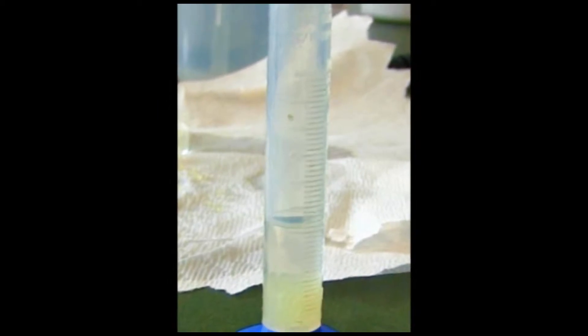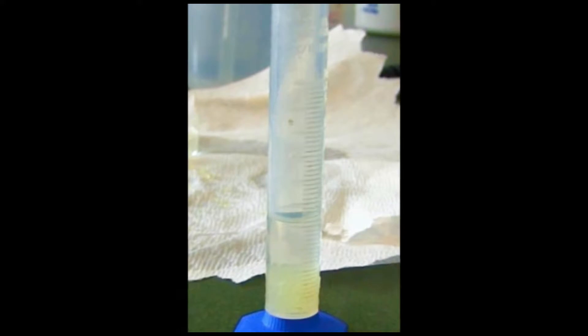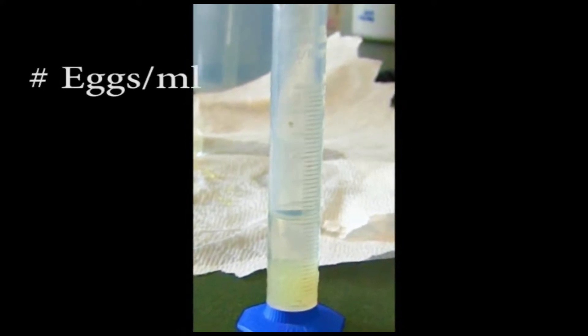Count the amount of eggs it took to raise 1 milliliter of water. Repeat this 2 more times to get an average. This average count is the number of eggs per milliliter.